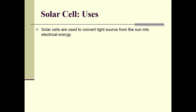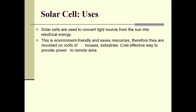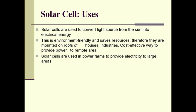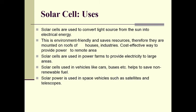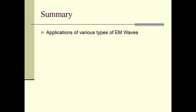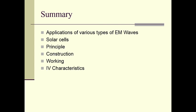Solar cells are used to convert light from the sun into electrical energy in an environment-friendly way. They are mounted on roofs of houses and used in power farms to provide electricity to large areas. Solar cells are used in vehicles like cars and buses to save non-renewable fuel. Solar power is also used in space vehicles such as satellites and telescopes. In summary, we have studied the principle, construction, and working of solar cells, their IV characteristics, fill factor, efficiency, different types, and their uses. This concludes our fifth chapter. Thank you.